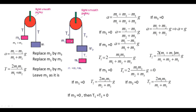Verifying m3 equals 0: in the T2 expression, making m3 equal to 0 gives T2 equal to 0. In the T1 expression, making m3 equal to 0 gives T1 equal to 0. Correspondingly, m3 equals 0 here means m2 equals 0 in the two-block case, and the tension becomes 0 there as well.